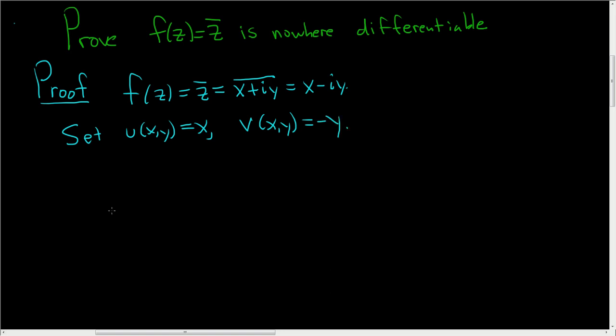All right, so now we'll compute the partial derivatives. So del u del x, that's equal to 1. Del u del y, that's equal to 0. And then del v del y, that's equal to negative 1. And del v del x, negative del v del x, well that's 0, and negative 0 is just 0, so 0.